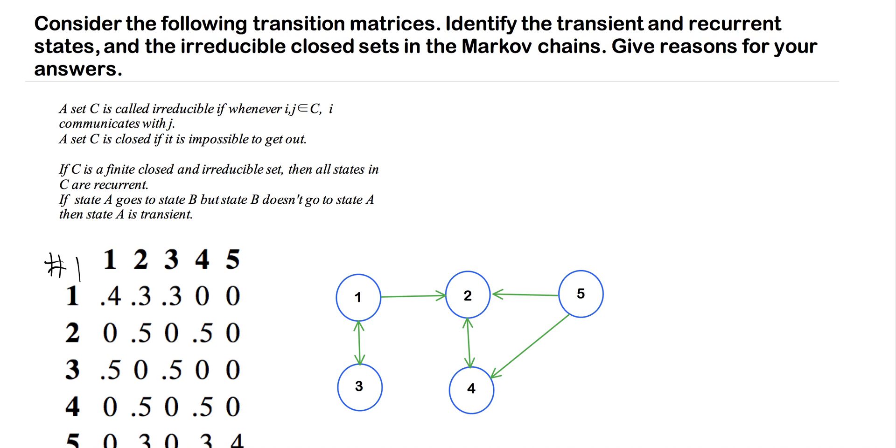A set C is called irreducible if whenever I and J are elements of C, I communicates with J. Simply, if you've seen multiple Markov chains, it's when we can get from one state to another in a certain set. That's all irreducibility means.